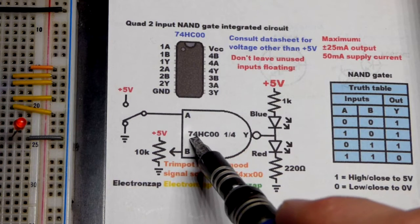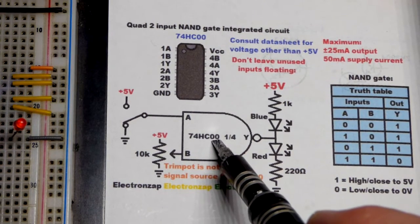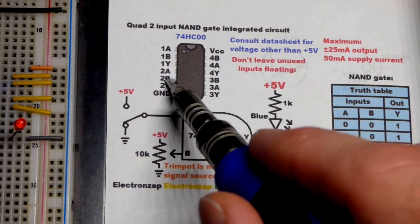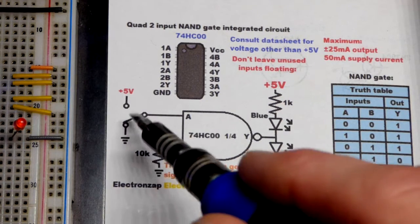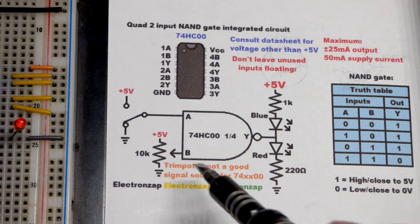The integrated circuit I'm using here is the 74HC00. I'm using one out of the four, number two, as we saw. We had a trim pot for one input and a jumper going to the positive or negative supply for the other.